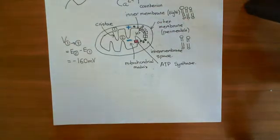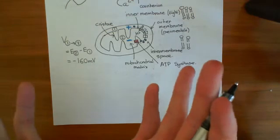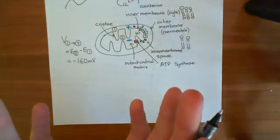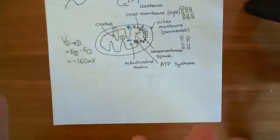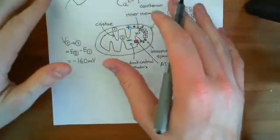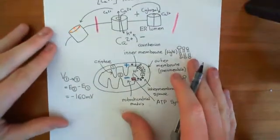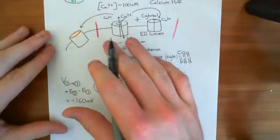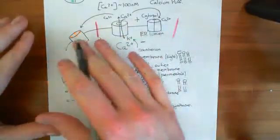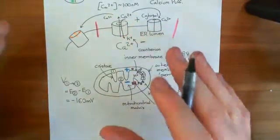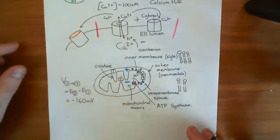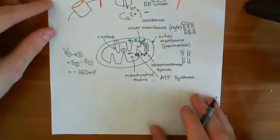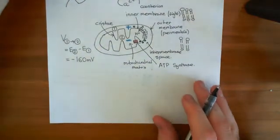Now we need to discuss what mitochondria have to do with calcium — what is the effect of releasing calcium from the endoplasmic reticulum going to have on the mitochondria? We'll do that in the next video.